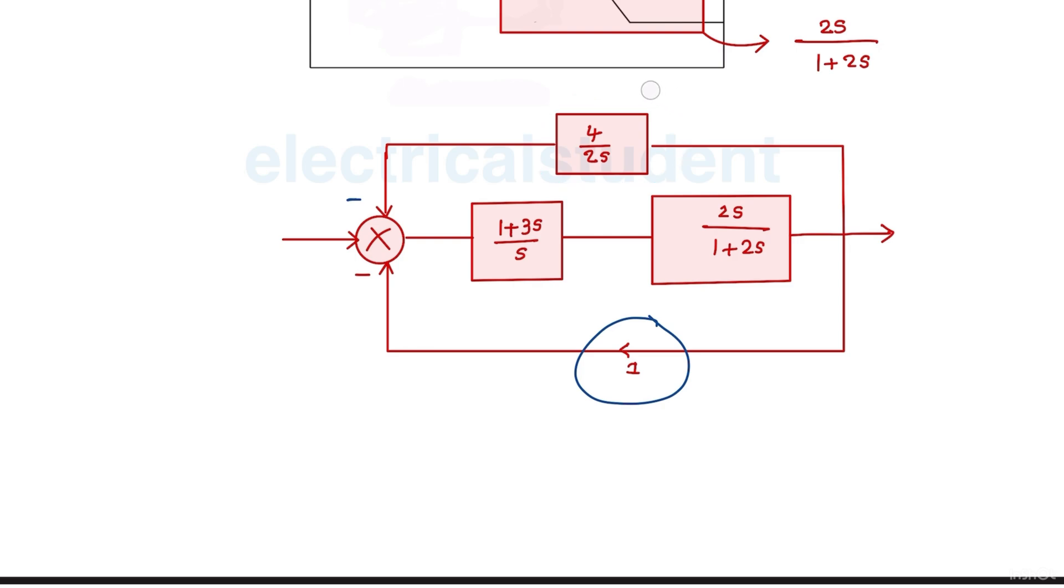Let's add them. So if you add those two, you will be getting, you can add that one here. Now it is clear these two blocks are in series, so this will be simply multiplied.